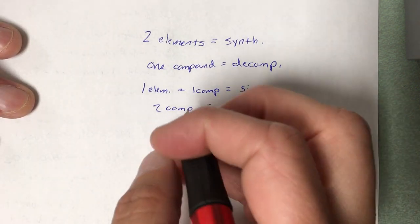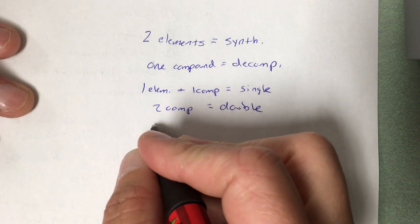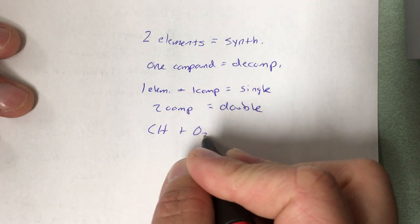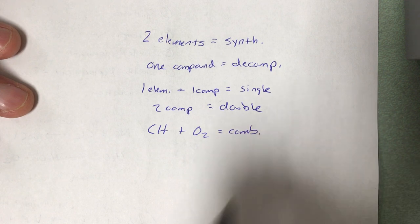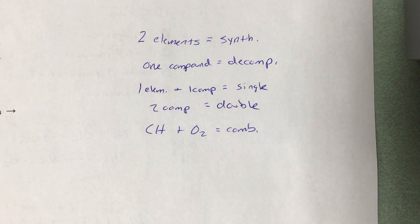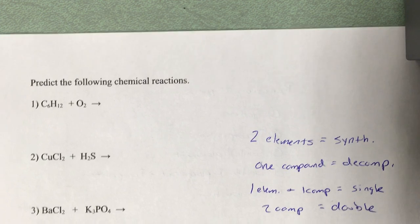The last type is combustion. It's going to be a hydrocarbon — C-something, H-something plus O2. That's combustion. Those are the easiest of all of them to predict because all you write down is carbon dioxide and water — CO2 and H2O. Let me take a look at a few examples with you to walk you through the process a little bit.